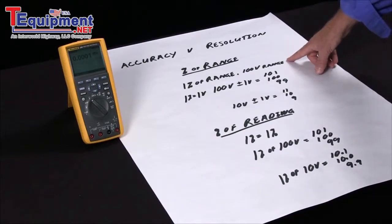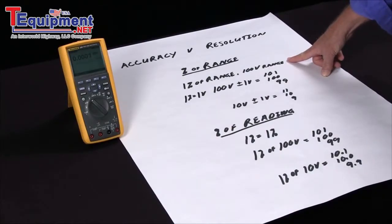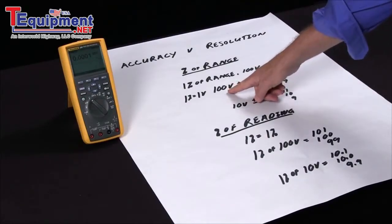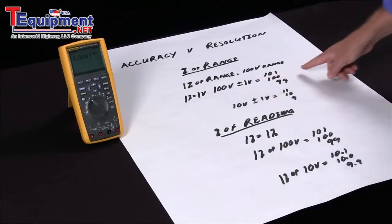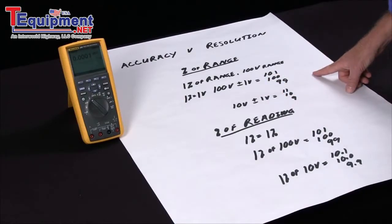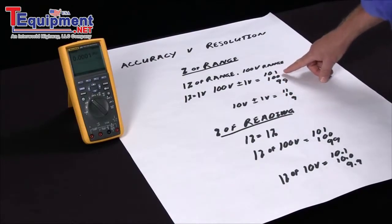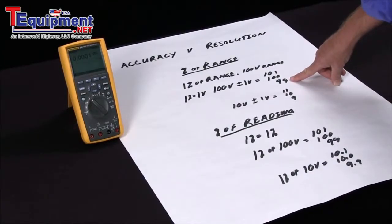For percent of range, if we have a one percent specification of range and we're on a hundred volt range, one percent of a hundred volts is one volt. So that means with a reading of a hundred volts, that can be within specification at plus or minus one volt. So a reading between a hundred and one and ninety-nine is actually a good reading on this meter.